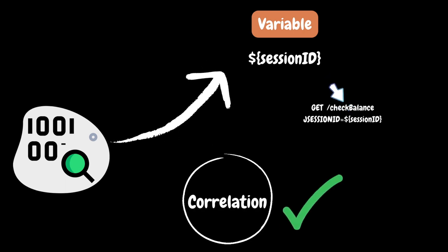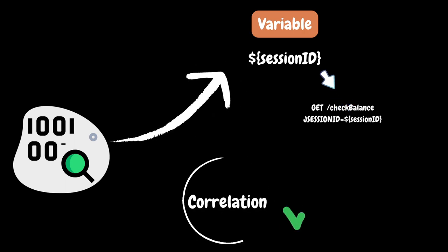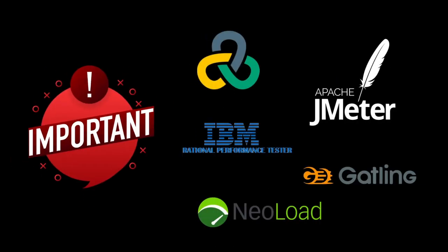The process of extracting a dynamic value, storing it in a variable, and passing it to subsequent requests is called correlation. This is one of the important customizations in any performance testing tool, including JMeter. If these dynamic values are not handled properly, then our testing might fail or sometimes may end up with inaccurate results.